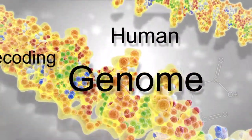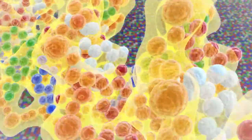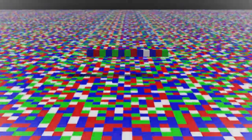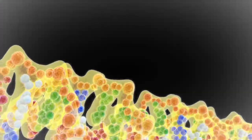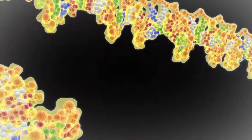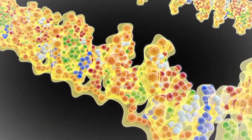The Human Genome Project remains one of the largest research projects in modern science. Beginning in 1990, its primary goal was to determine the sequence of base pairs of the human DNA and to identify and map the more than 20,000 genes of the human genome.